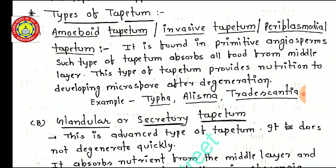Examples of amoeboid tapetum include Typha, which is a hydrophyte, Ellisma, and Tradescantia. These are examples of plants with amoeboid tapetum. In many examinations, the question occurs: which plant has amoeboid tapetum? If one of these plants is given as an option, the correct answer is Typha, Ellisma, or Tradescantia.